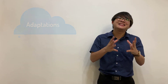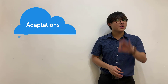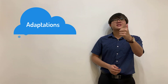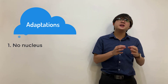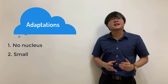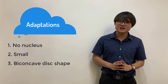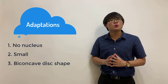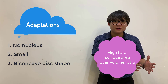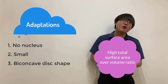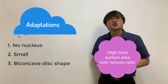What are the adaptations for red blood cells to transport oxygen effectively? Remember, there are three adaptations. Firstly, red blood cells have no nucleus. Secondly, red blood cells are small. And thirdly, red blood cells have a biconcave disc shape. All three characteristics allow the red blood cell to have a high total surface area over volume ratio for more effective diffusion and transport of gases, particularly oxygen.